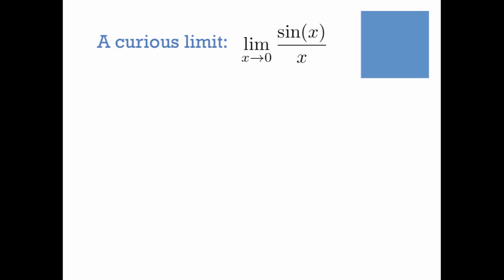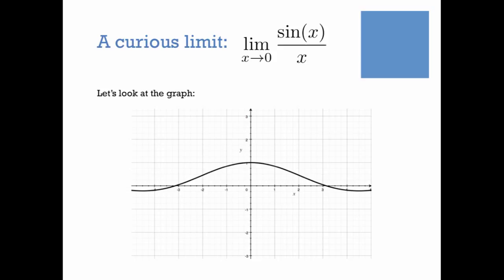Now here's a curious limit: the limit as x goes to 0 of sine x over x. If you plug in 0, you get 0 over 0, so there's some trickery we can do. Looking at the graph of sine x over x, at x equals 0 it looks like we're landing on 1. Graphs aren't super reliable, so we can't conclude that from the picture alone, but we have a sense the answer should be 1. What follows is a neat little proof using trig and geometry to prove that that's the answer — you won't need to commit this to memory, but it's good to see at least once.